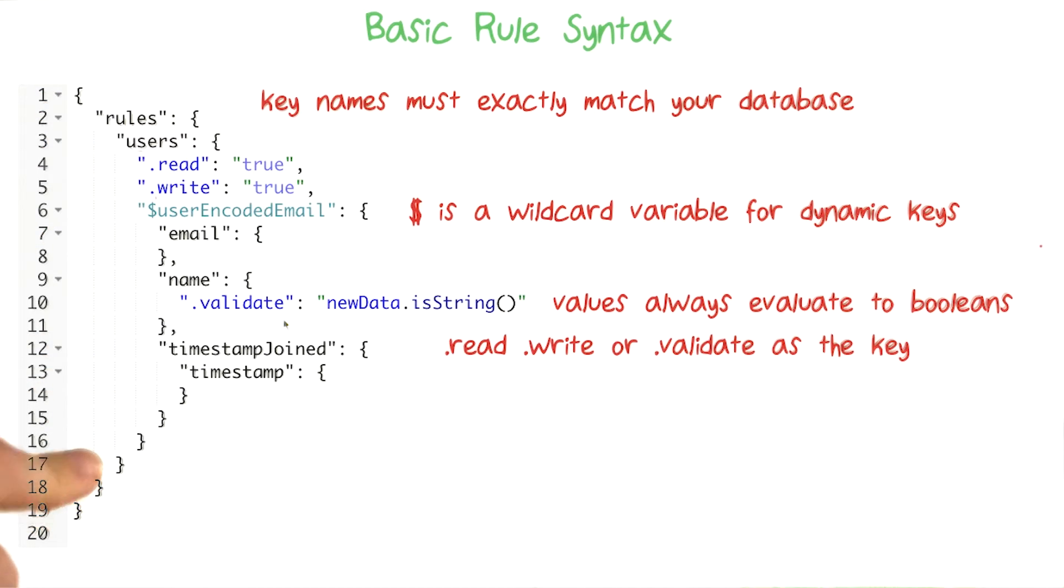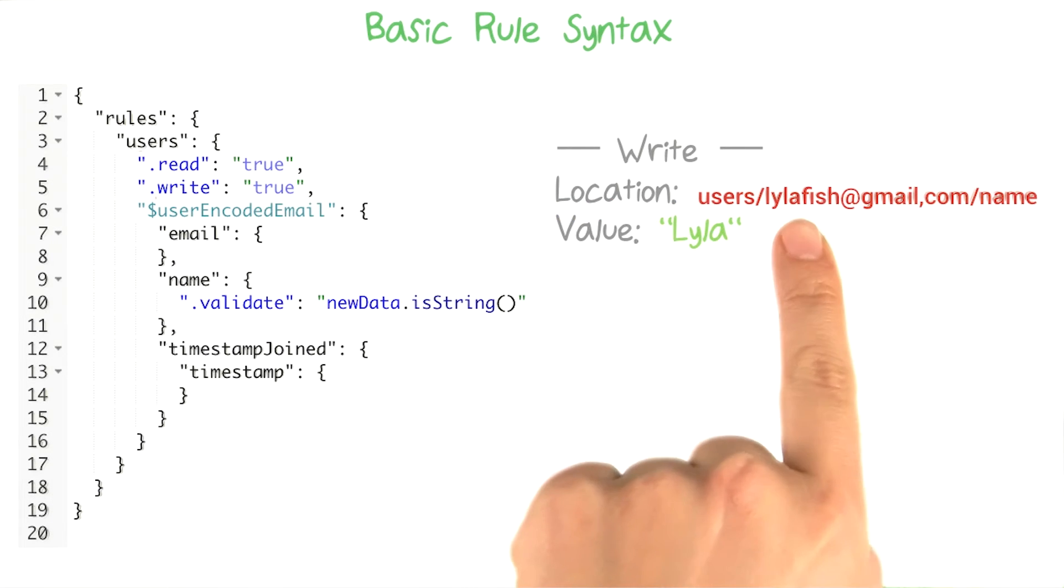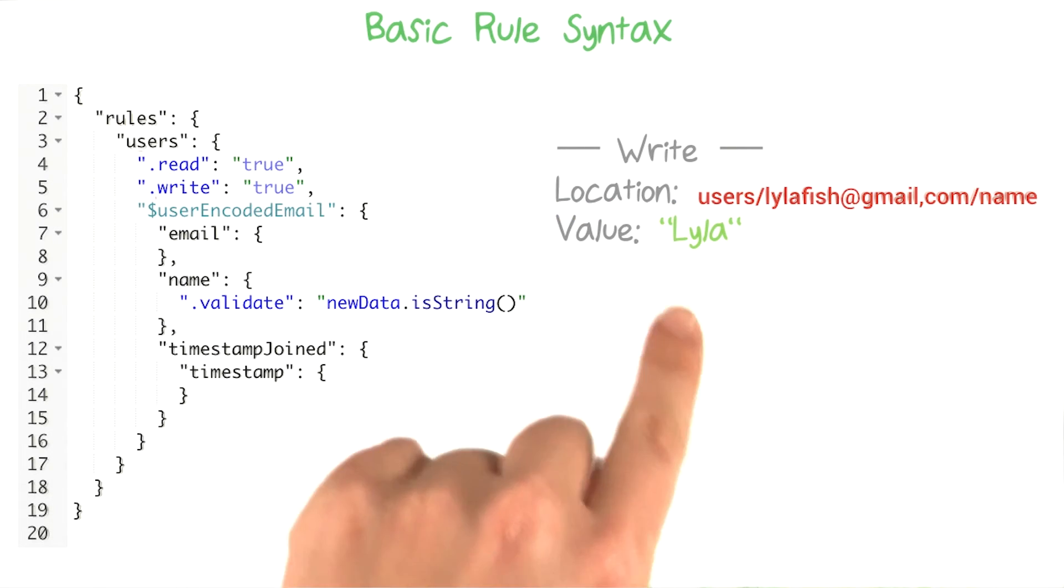Okay, so once you've written this out, and you actually start to try to read or write data at certain locations, all of the applicable rules along the path to that location will be checked. Validate and write rules are checked whenever a value is written, and read rules are checked whenever listeners are attached. For example, if I tried to write in this location with the value lila,